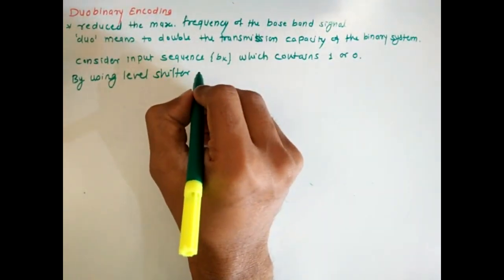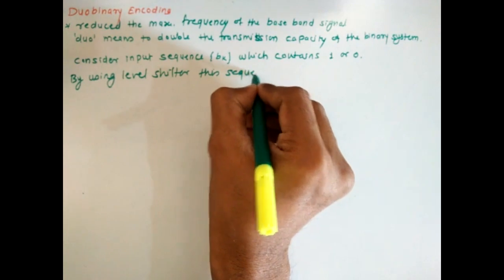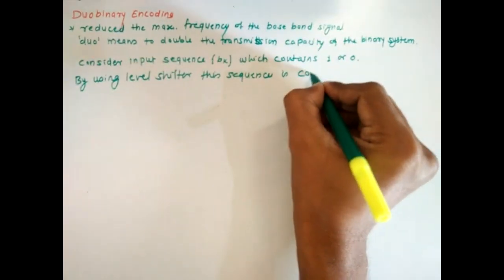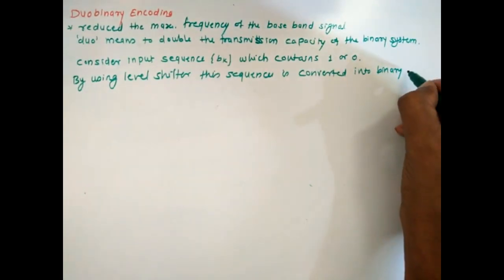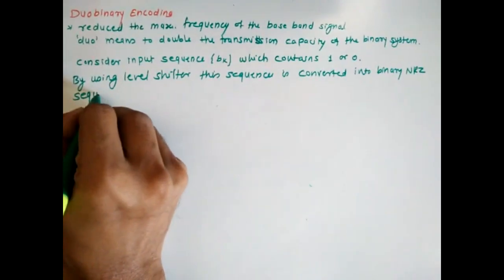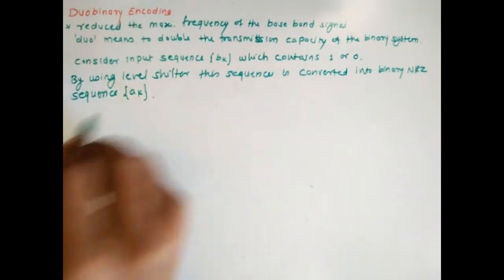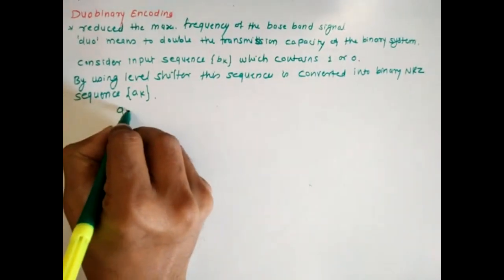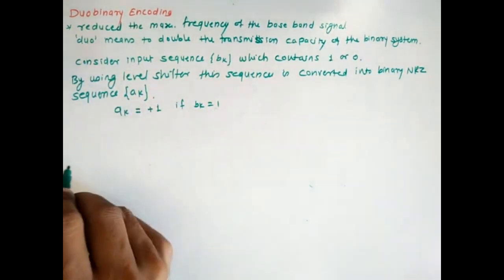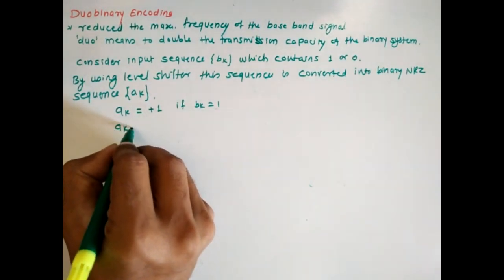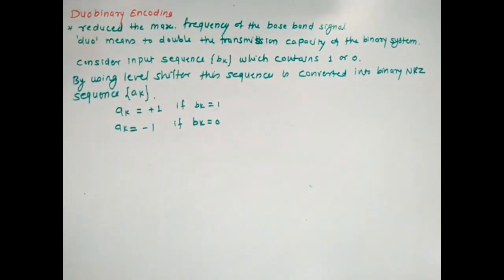By using a level shifter, this sequence is converted into binary NRZ sequence, that is ak, where ak equals 1 if bk equals 1, and ak equals minus 1 if bk equals 0.